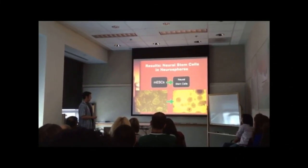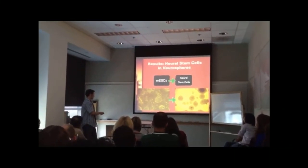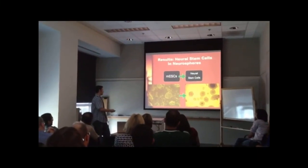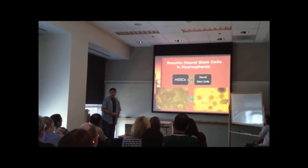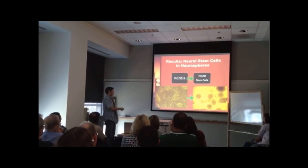This image shows embryonic stem cells, joined in these conglomerates here, growing on a mouse embryonic fibroblast feeder layer, which are these spindles.